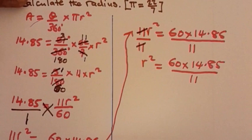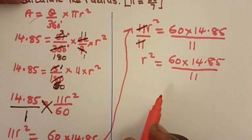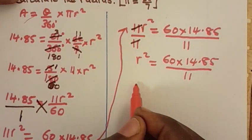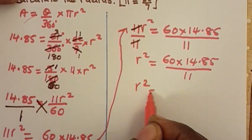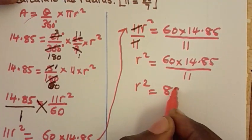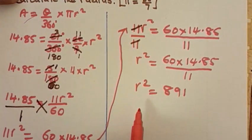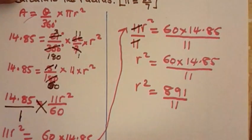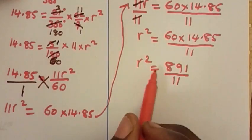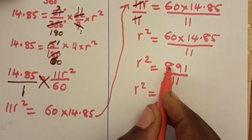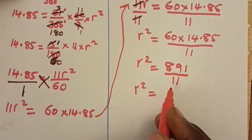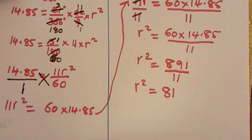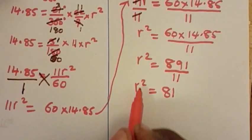Now we compute: 60 times 14.85 equals 891. So we have r squared is equal to 891 divided by 11, and 891 divided by 11 is 81. Therefore r squared equals 81.